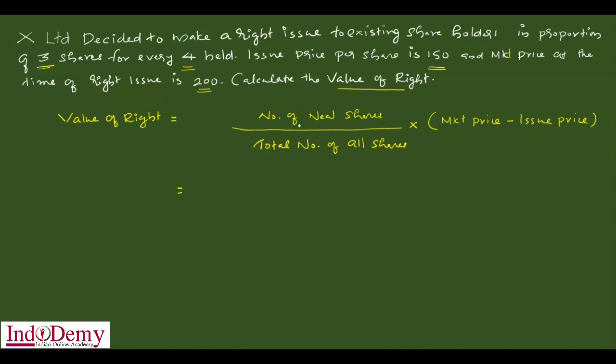From the information given, number of new shares - three shares for every four held - so number of new shares is three, divided by total number of shares.